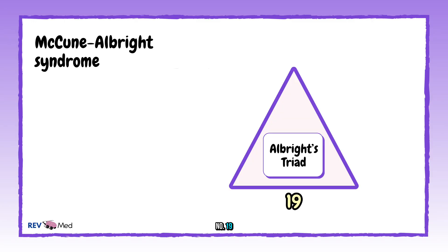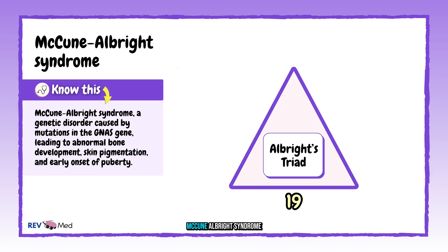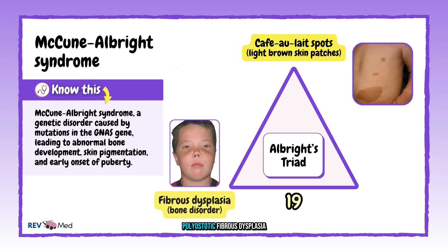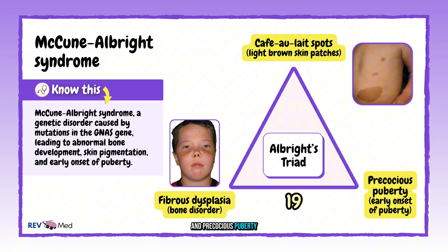Number nineteen: Albright's triad — McCune-Albright syndrome. You have café-au-lait spots, polyostotic fibrous dysplasia, and precocious puberty, and also Cushing syndrome. It's caused by a mosaic mutation in the GNAS gene.